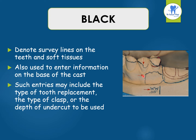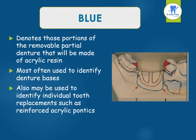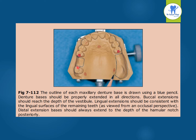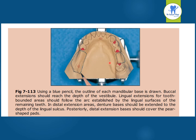What does the black colour denote? It denotes the survey lines on the teeth and soft tissues. It is also used to enter some information on the base of the cast, including the type of tooth replacement, type of clasp, or the depth of undercut to be reduced. What does the blue colour denote? It denotes those portions of RPD that will be made of acrylic resin. It is often used to identify the denture bases and also to identify individual tooth replacements such as reinforced acrylic partings. The outline of the maxillary denture base is drawn using a blue pencil, and the denture bases should be properly extended in all directions. Using a blue pencil, the outline of each mandibular base is drawn. Buccal extensions should reach the depth of the vestibule, and lingual extensions for the tooth-bounded areas should follow the arc established by the lingual surface of the remaining teeth.